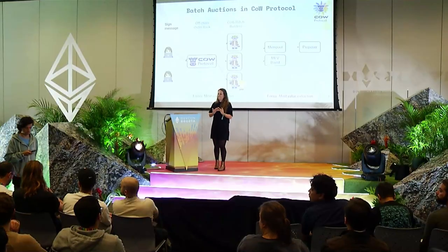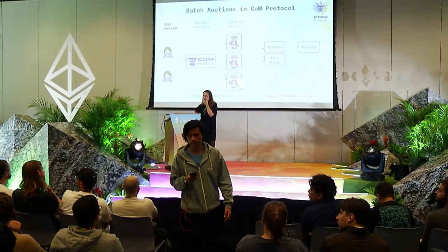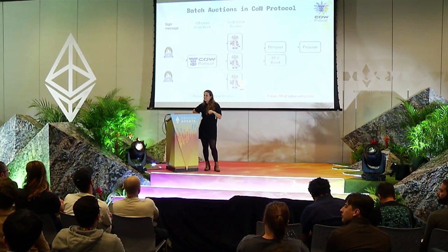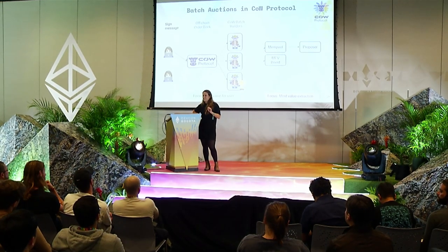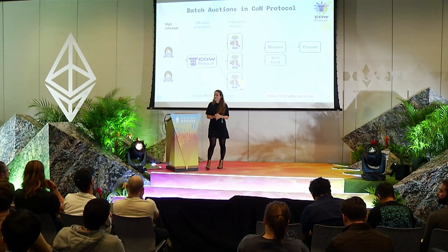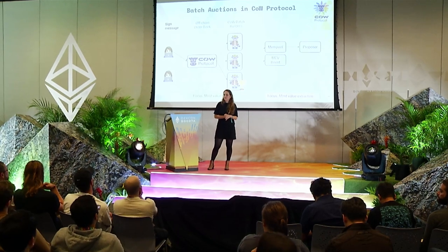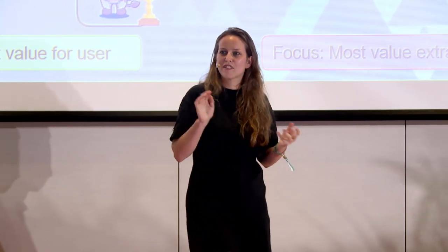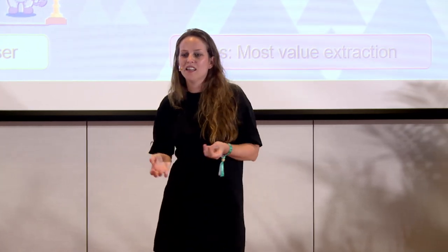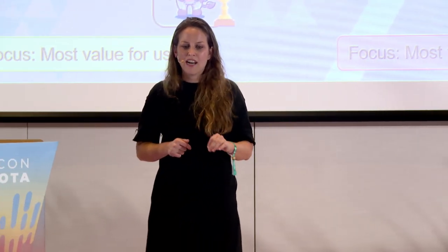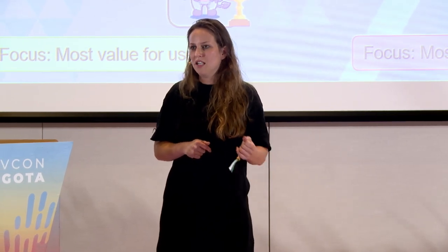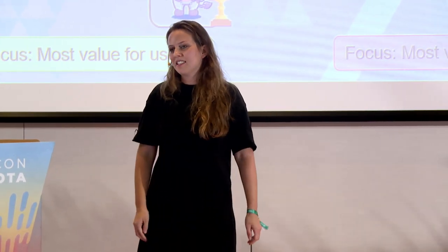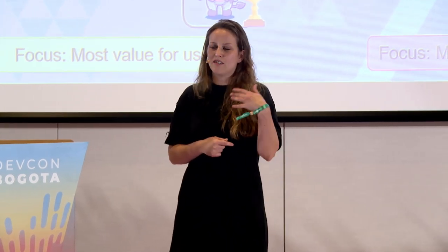Second question: by moving this to the application layer, how do you deal with censorship resistance in the off-chain order books? If I go to the CowSwap website and make a transaction, how do I know I won't be censored by CowSwap or whoever runs the protocol? That's a very good question — it's something we're working on. We still have some centralizing components in Cow Protocol. Right now the off-chain order book is hosted by us, but the idea is that in the future it will be decentralized and not hosted by us anymore. It's an ongoing process of decentralizing more and more components.